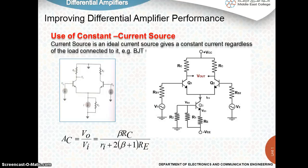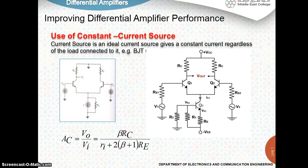Now, for a good differential amplifier, we expect a large differential gain Ad, which should be very large compared to common mode gain Ac. This is because the common mode rejection ratio ability of the circuit should be improved by making the common mode gain as small as possible. If larger the value of emitter resistance, smaller will be the common mode gain. Hence, our main aim is to increase the value of emitter resistance.